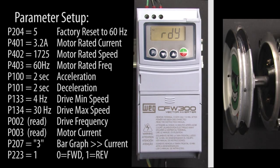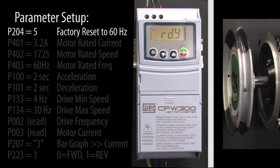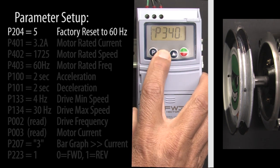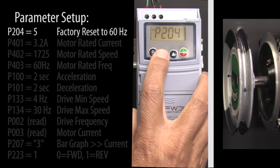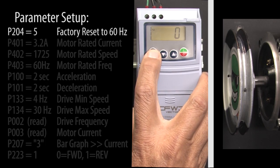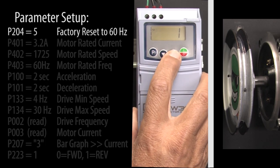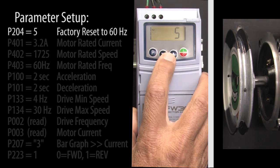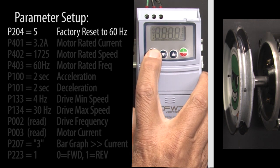Before doing anything, let's reset the drive to factory default so if you're following along we're both starting at the exact same place. Press the P button to get to the parameters and scroll to parameter 204. Hit P again so we can change the parameter to a 5 which resets the drive's parameters to factory default for 60 Hz and press P to accept that.